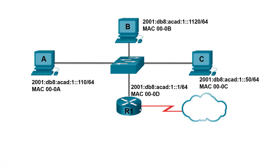In this video, we will discuss the process of how IPv6 performs address resolution using ICMPv6 Neighbor Solicitation and Neighbor Advertisement Messages. This is similar to the ARP process used by IPv4, but has certain advantages that we will see in a moment.